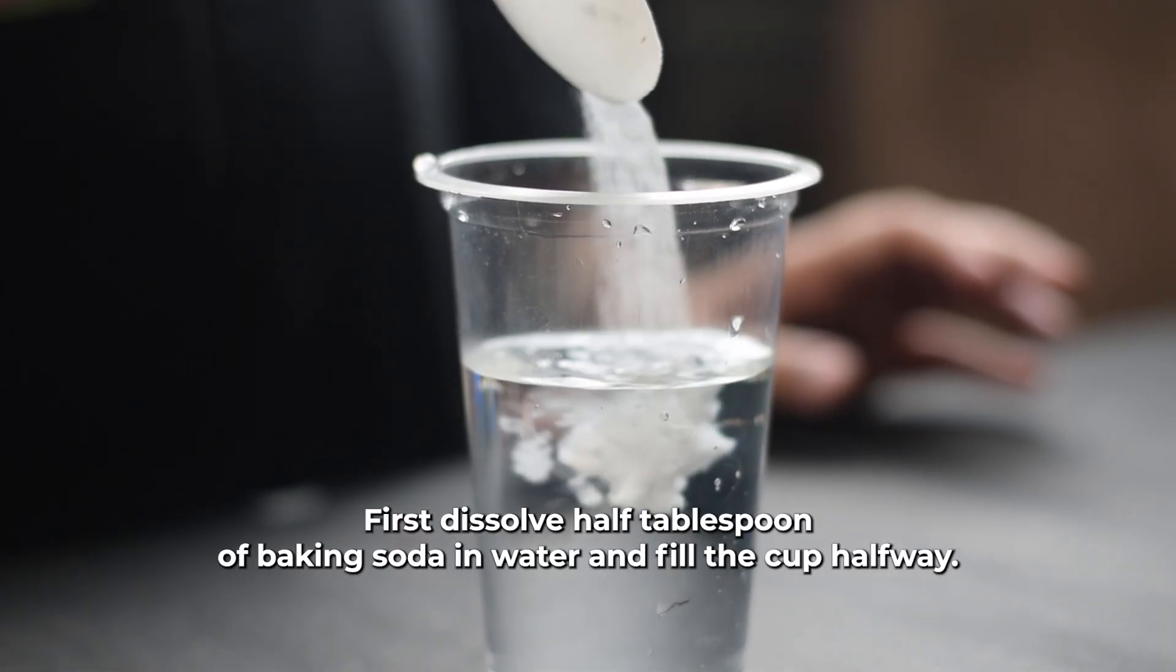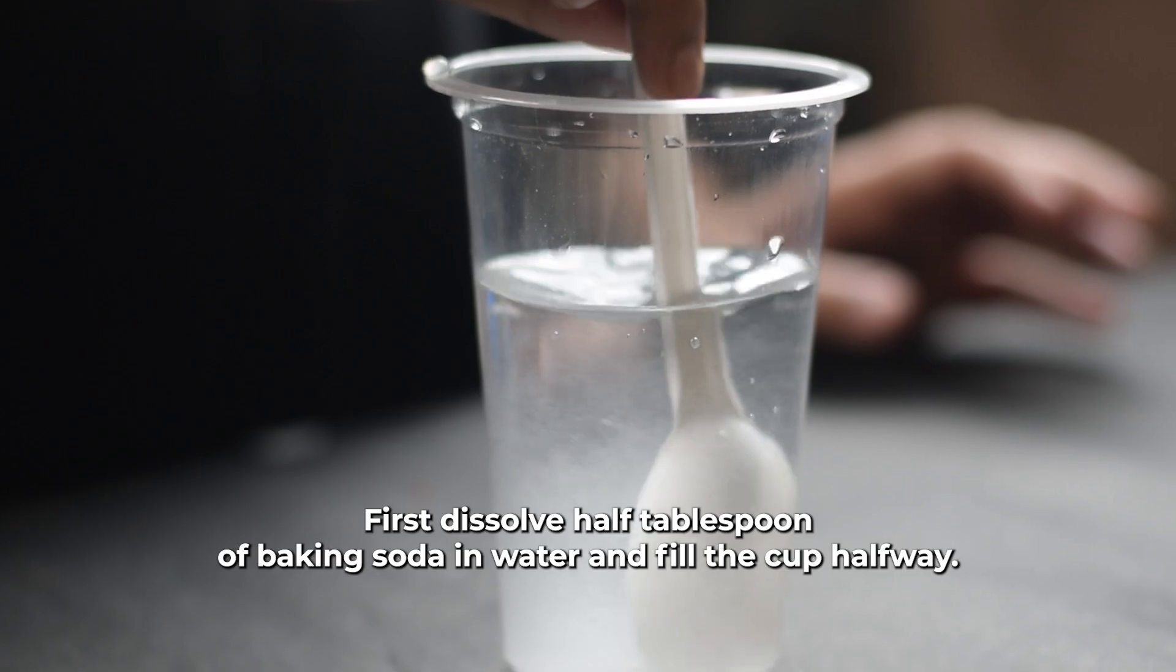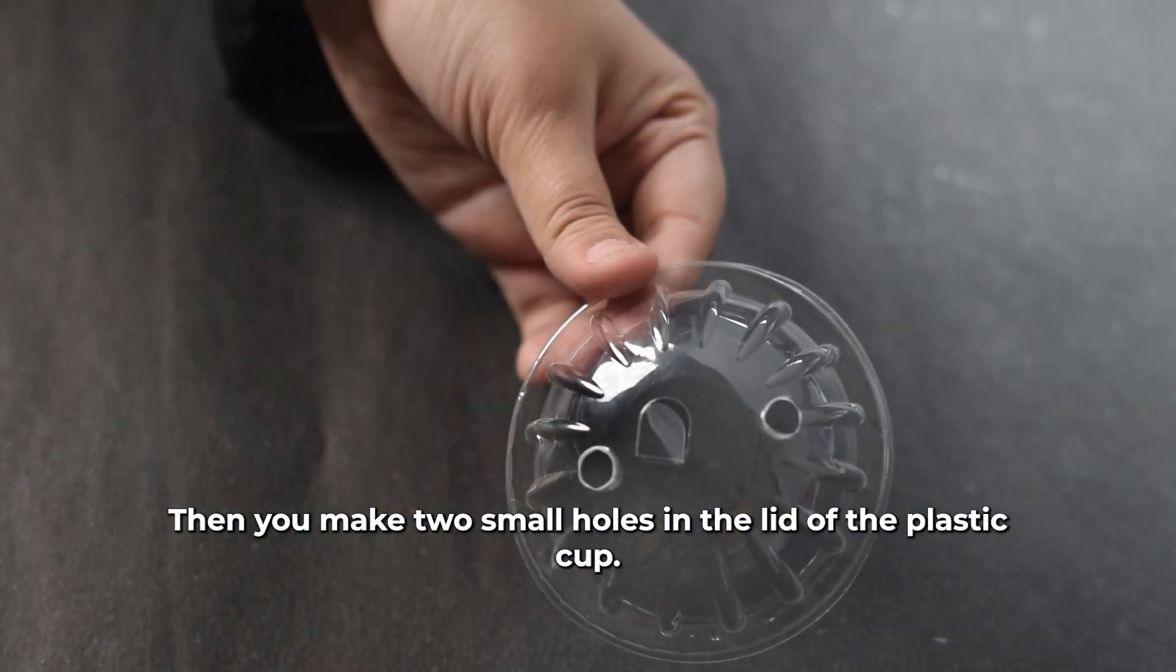First, dissolve half a tablespoon of baking soda in water and fill the cup halfway. Then make two small holes in the lid of the plastic cup.